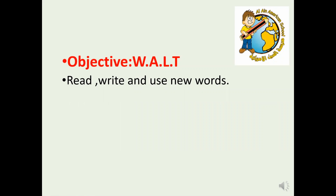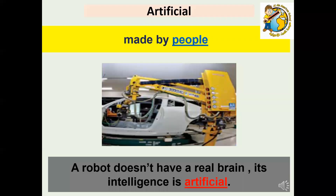Read, write, and use new words correctly. 1. Artificial. A robot does not have a real brain. Its intelligence is artificial, created by humans.